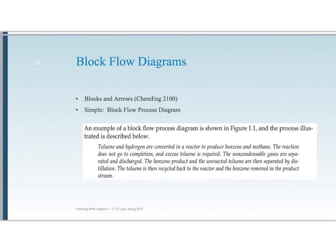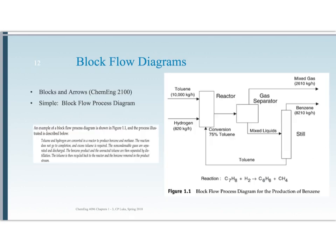Block flow diagrams are what you learned how to do in mass and energy balances. They are simple blocks and arrows. For instance, if you have this little process here: toluene and hydrogen are converted in a reactor to produce benzene and methane. The reaction does not go to completion, and excess toluene is required. The non-condensable gases are separated and discharged. The benzene product and the unreacted toluene are then separated by distillation. The toluene is then recycled back to the reactor and the benzene removed in the product stream. So we can draw a little box that's a reactor, another box for the separation process, with arrows for feed streams, a recycle going back, and product streams — and it might end up looking something like this.